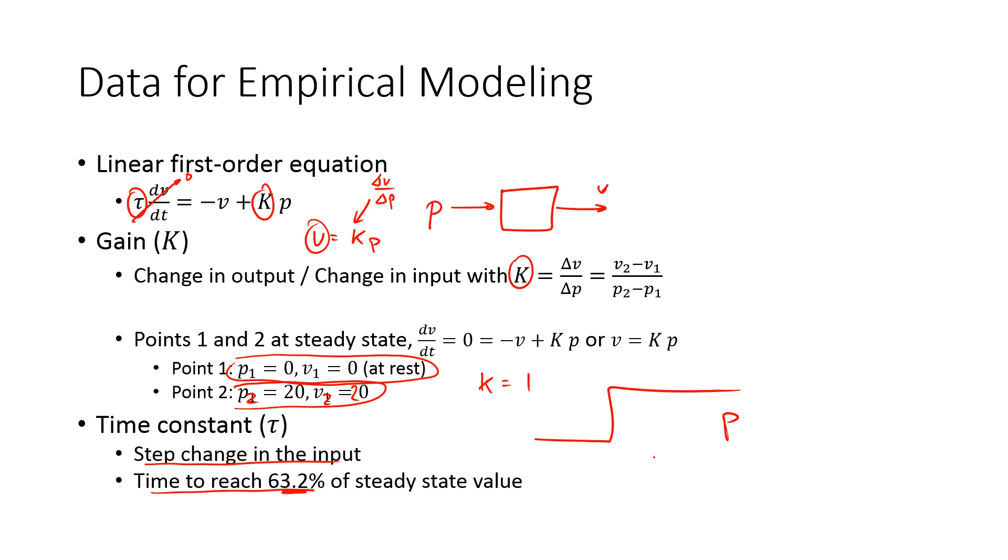then our velocity of v might go up like that. This is going to be 63% of this total change. And then from where the step happened, that's going to equal tau. That just applies to this equation right here.